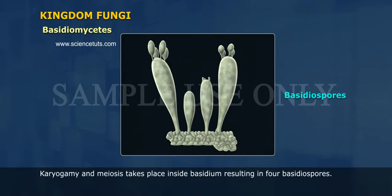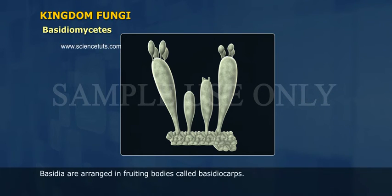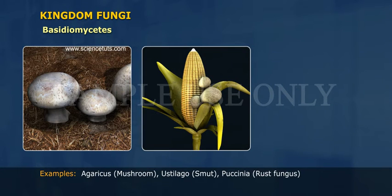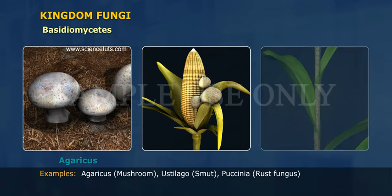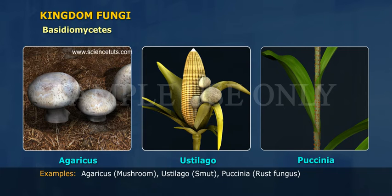Karyogamy and meiosis take place inside the basidium, resulting in four basidiospores. Basidia are arranged in fruiting bodies called basidiocarps. Examples include Agaricus (mushroom), Ustilago (smut), and Puccinia (rust fungus).